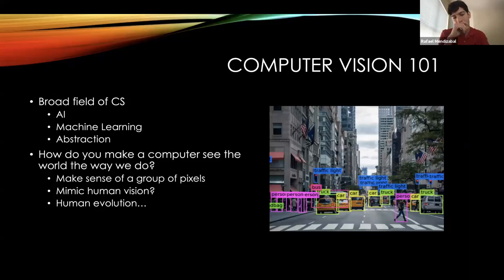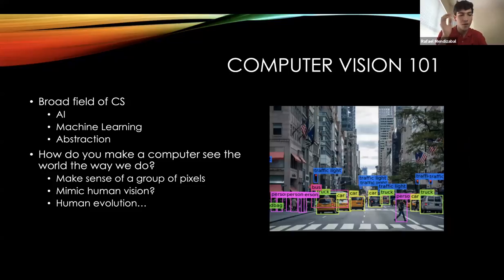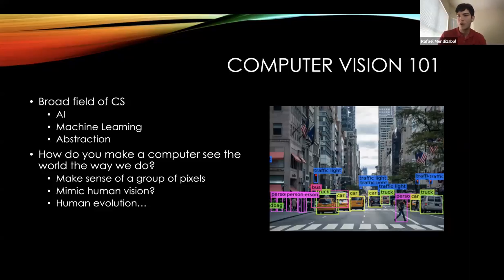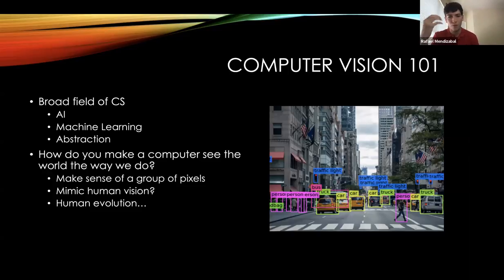The question that computer vision really responds to is: how do you make a computer see the world the way we do? Because when you give a computer an image, they're just looking at a bunch of pixels. That's why I added that they mimic human vision — you're trying to get the computer to see the world as similar as to how a human does, trying to interpret things the way we do.